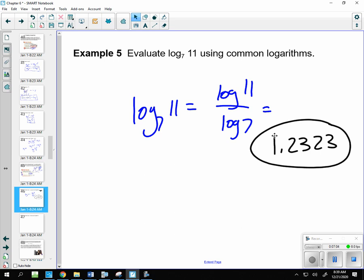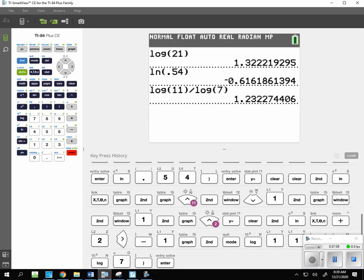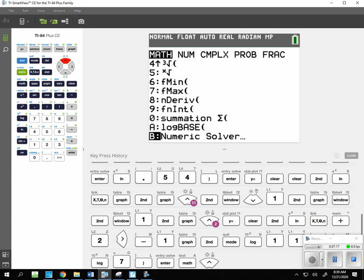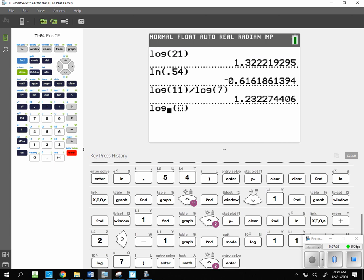Because, again, graphing calculators have evolved over the years. So if I went back to the graphing calculator, instead of just doing it the way I did it, I am now going to actually go to math. And arrow down. And you see an A there. It says log base. Everybody see that? Log base. So it will allow me to actually type in log base 7 of 11. So, again, graphing calculators have evolved over the years so that we don't have to necessarily use the change of base formula. And you'll see that it's going to end up being the exact same answer.